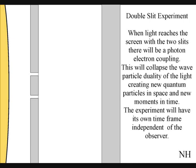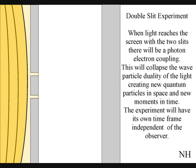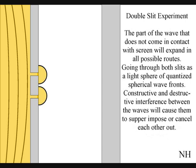In the two-slit experiment, we can see light radiate out, striking objects, creating new moments of time. When the light reaches the screen with the two-slits, the photon will react with the electrons of the screen. This will collapse the wave-particle duality of the light, creating new quantum particles in space and new moments in time.